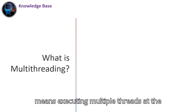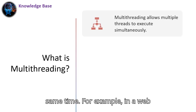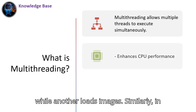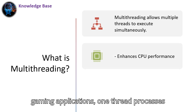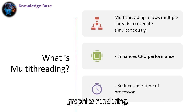Multithreading means executing multiple threads at the same time. For example, in a web browser, one thread handles user input while another loads images. Similarly, in gaming applications, one thread processes the game logic while another handles the graphics rendering.